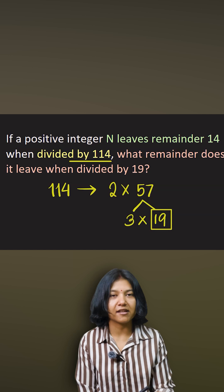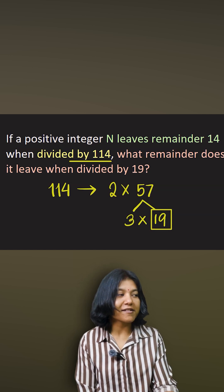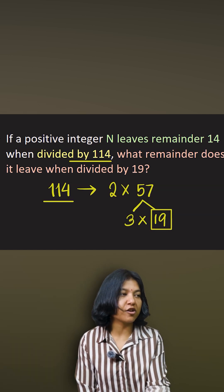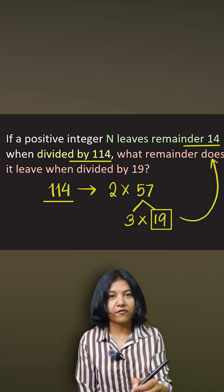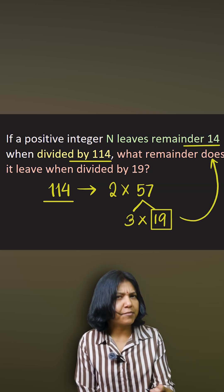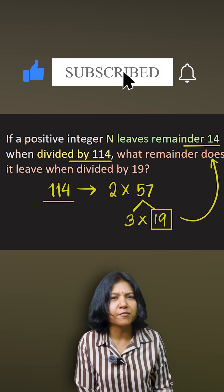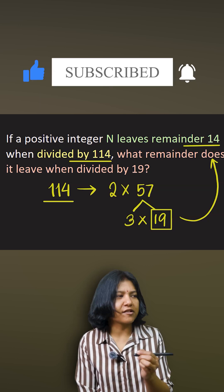So the best part is if 114 leaves a remainder of 14, then this 19 will also have to leave the same remainder, provided the remainder given to you is less than 19. Had it been bigger than 19, I must have removed 19 from that value. So if it is leaving the remainder of 14 when divided by a multiple of that number, it is going to leave the same remainder.